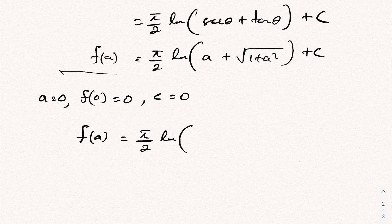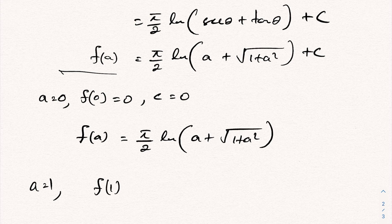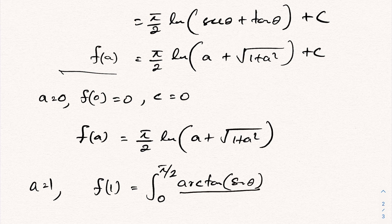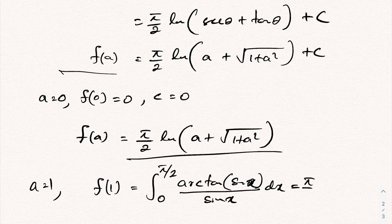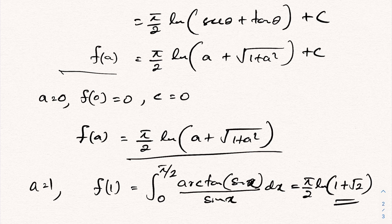Therefore F(a) = (π/2)·ln(a + √(1 + a²)). When a = 1, F(1) is exactly our original integral ∫₀^(π/2) arctan(sin x)/sin x dx, which equals (π/2)·ln(1 + √2). This is the answer for this integral. If you like this type of video, please subscribe to this channel. Thank you for watching.